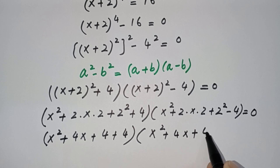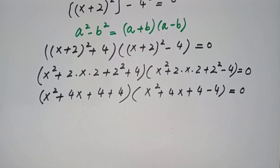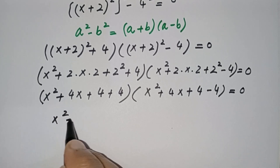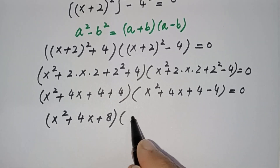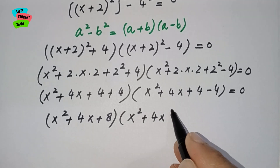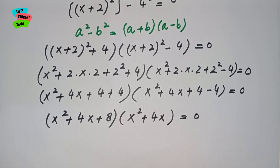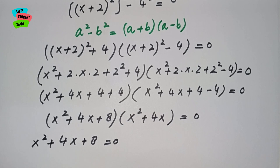Simplifying, the first factor becomes x² + 4x + 4 + 4, which is x² + 4x + 8, and the second factor becomes x² + 4x + 4 − 4, which is x² + 4x. This gives us two equations: x² + 4x + 8 = 0 and x² + 4x = 0.